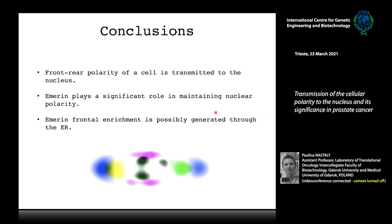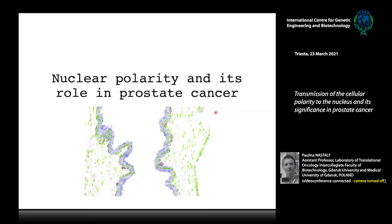In conclusion, the front-rear polarity of a cell can be transmitted to the nucleus. Emerin is one important player in maintaining nuclear polarity, though there are certainly many more. Importantly, emerin frontal enrichment is possibly generated through endoplasmic reticulum enrichment at the front of the cell.